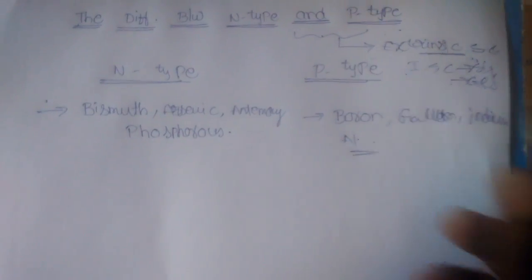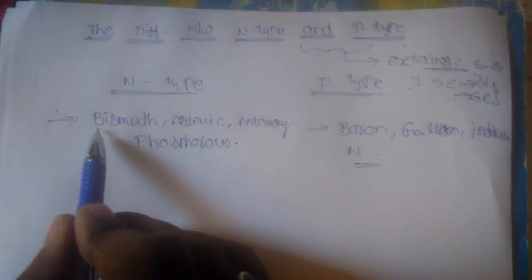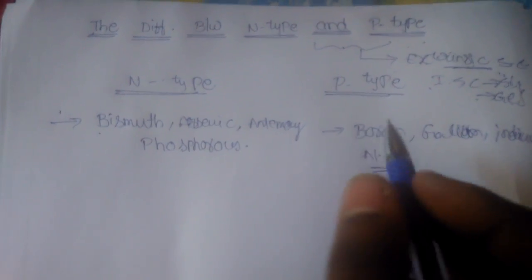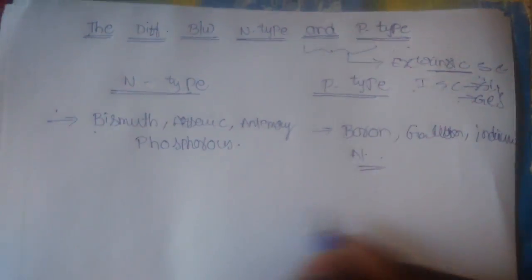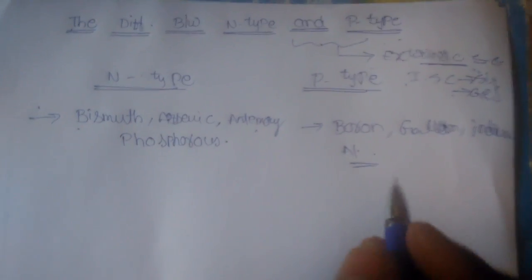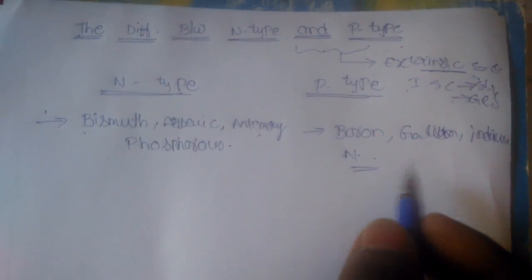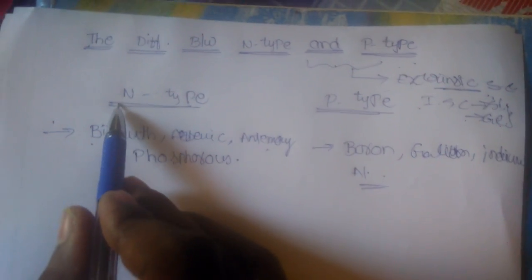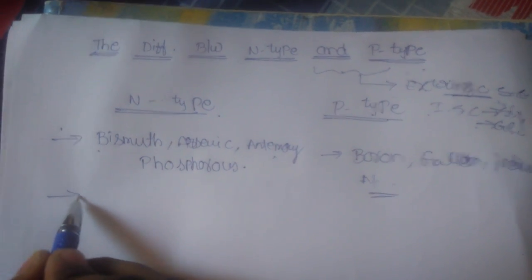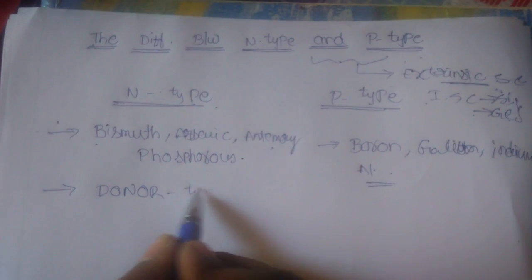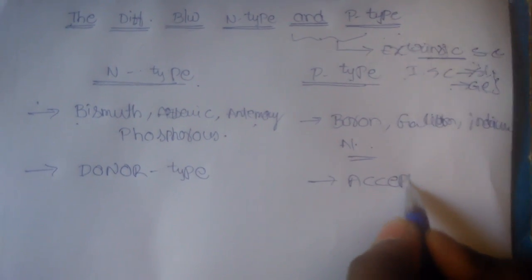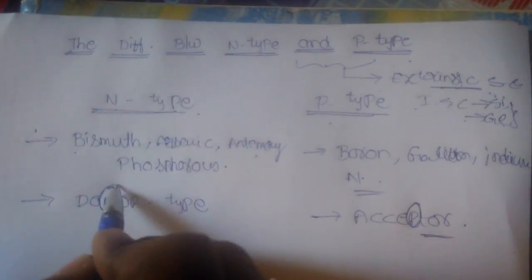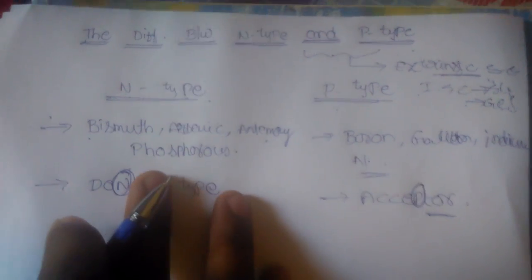These are the materials in p-type semiconductors. First of all, we will learn which materials come under n-type or p-type. Every competitive exam has at least one question from these two semiconductors, so we need to learn this topic very accurately. N-type is normally called donor type, and p-type is called acceptor type.